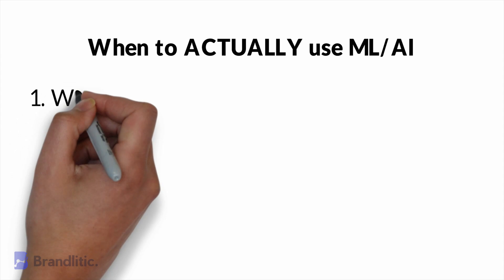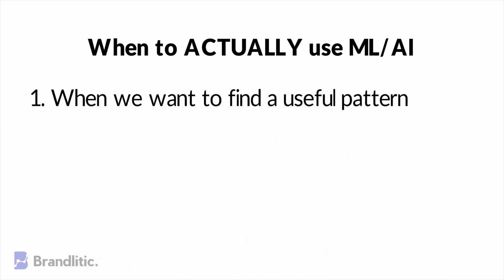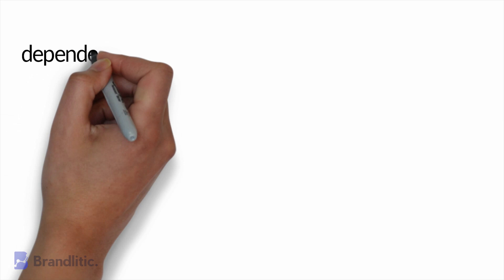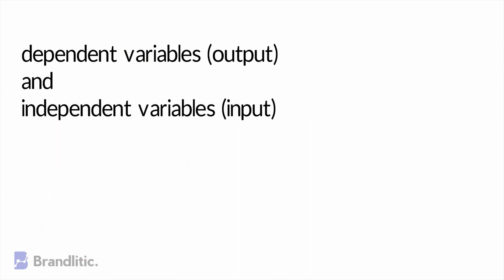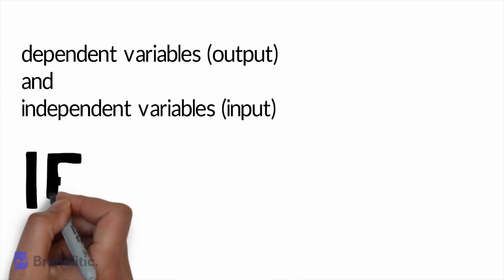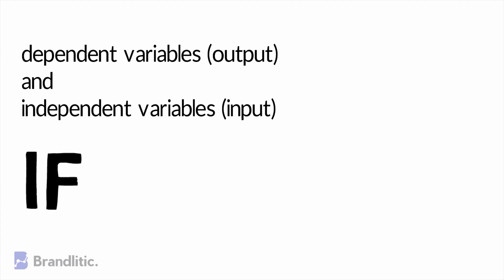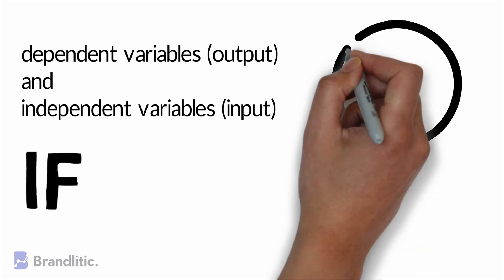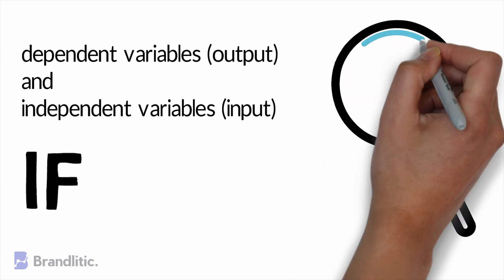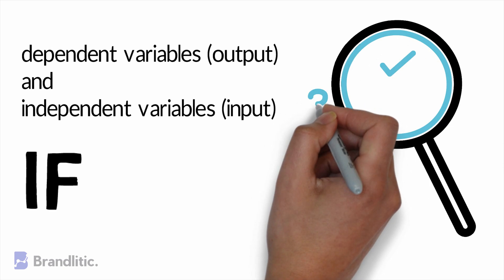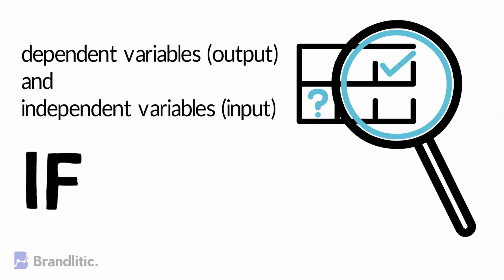1. When we want to find a useful pattern. If you need to discover a pattern between a dependent variable and an independent variable, and if we could find it, it would not just make our product better but also could help us explore a brighter and newer side of the program we are building.